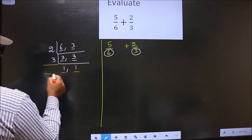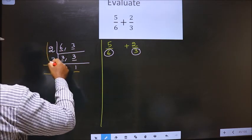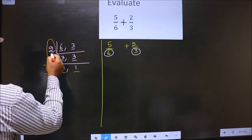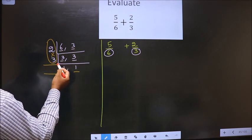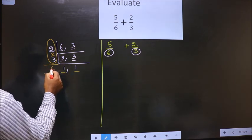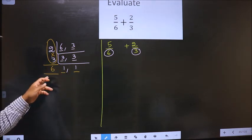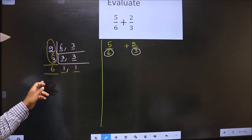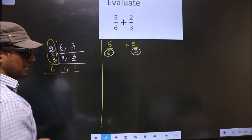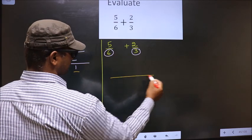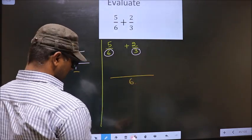So our LCM is the product of these numbers that is 2 into 3 is 6. Once you got the LCM, we should write the LCM here in this way.